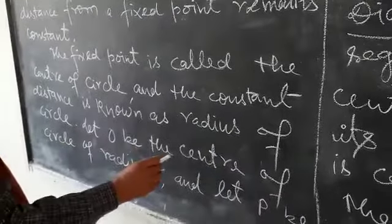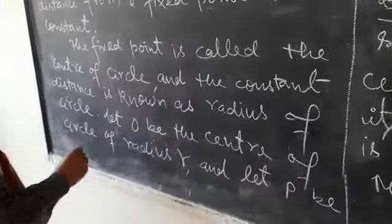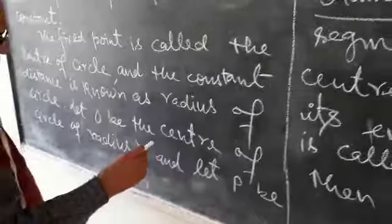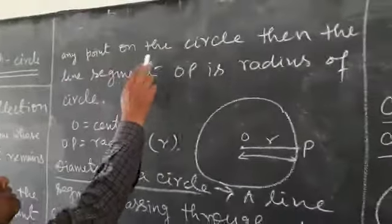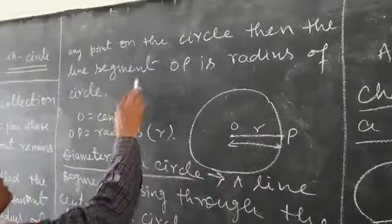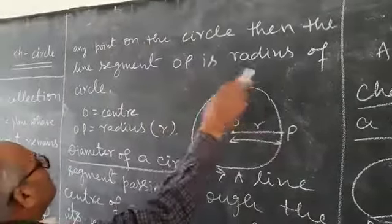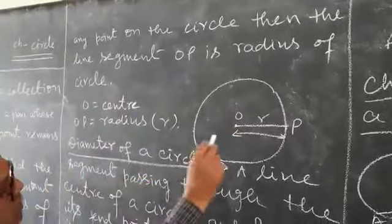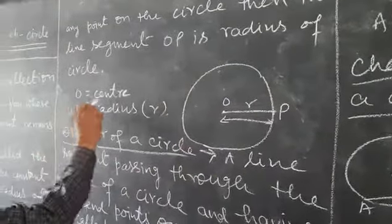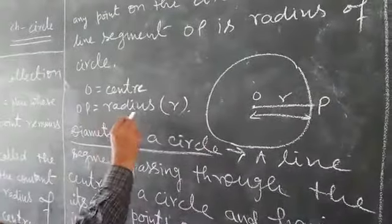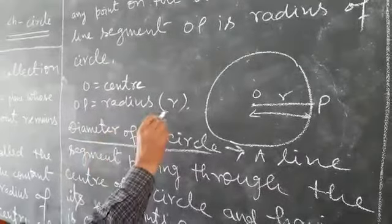Let O be the center of a circle of radius R and let P be any point on the circle. Then the line segment OP is radius of a circle. Therefore, in the given figure, O is the center and OP is the radius which is known as R.